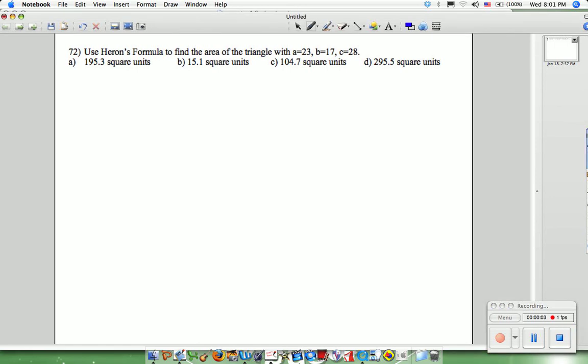Question 72. Use Heron's formula to find the area of a triangle with A equals 23, B equals 17, C equals 28.